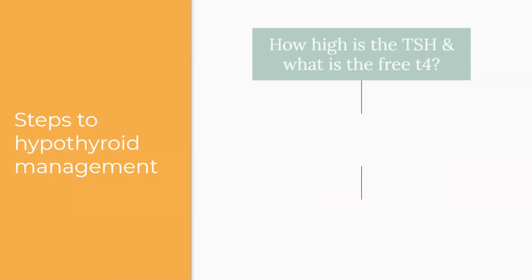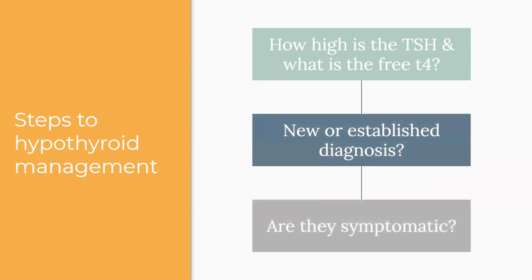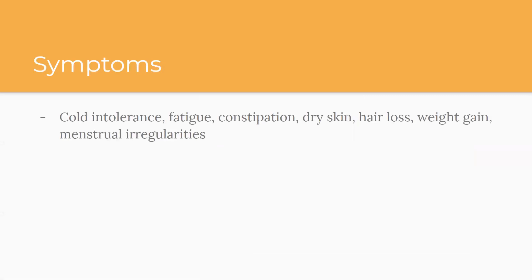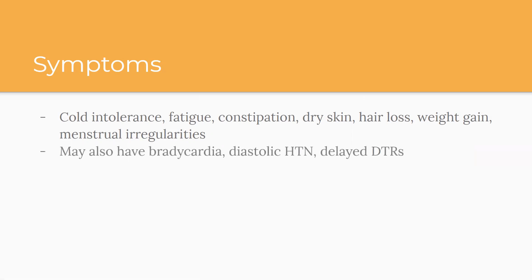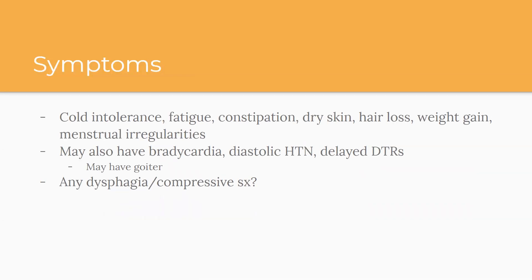Symptoms to recap: cold intolerance, fatigue, constipation, dry skin, hair loss, weight gain, and menstrual irregularities. Patients can also have bradycardia, diastolic hypertension, and delayed deep tendon reflexes. They may have a goiter — when the thyroid is overstimulated trying to work harder, it can become enlarged. I also ask about dysphagia or compressive symptoms in case there's enlargement or nodules not felt on exam.